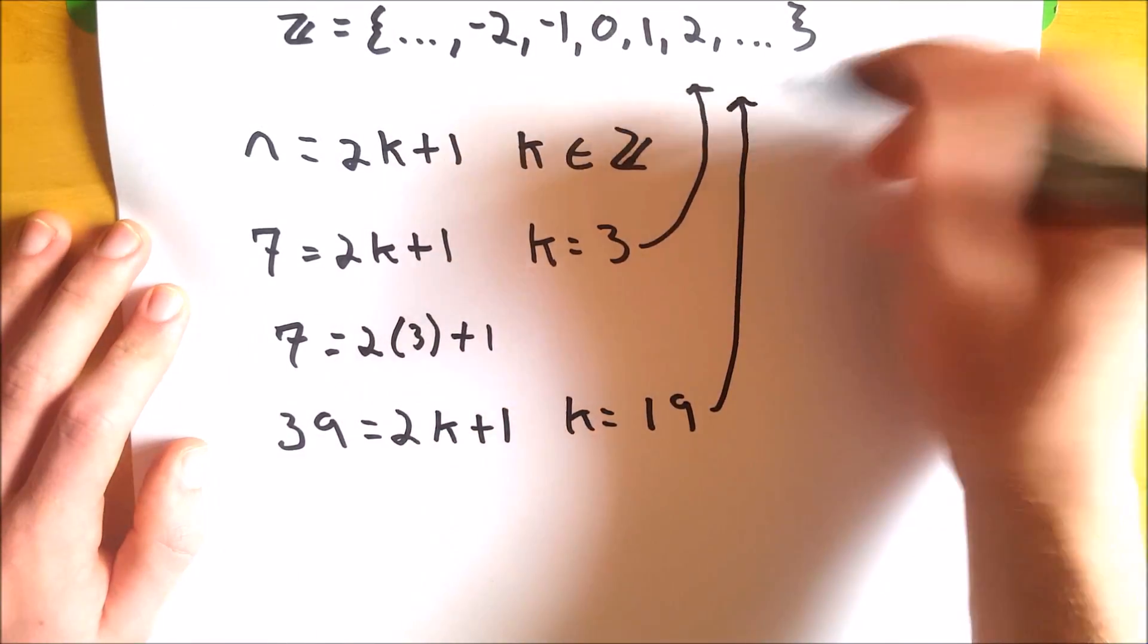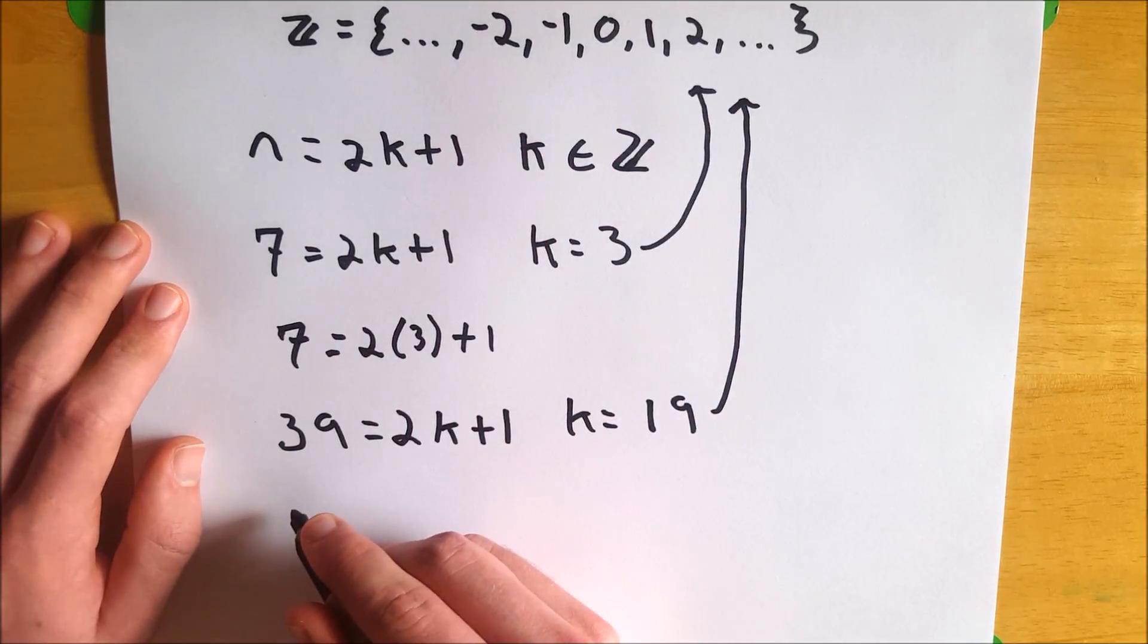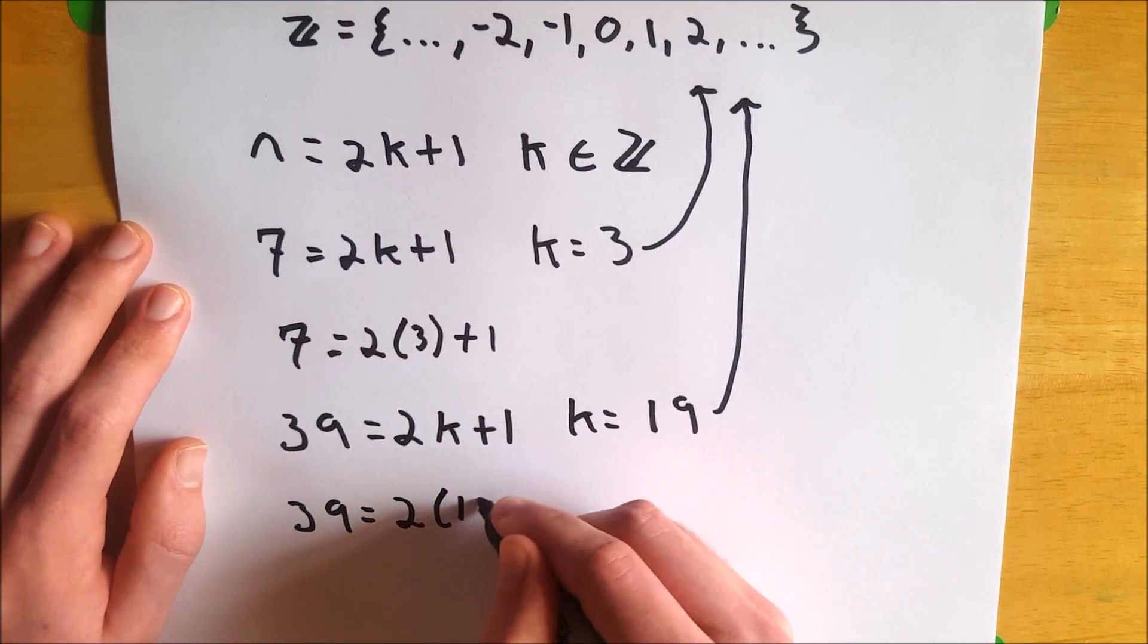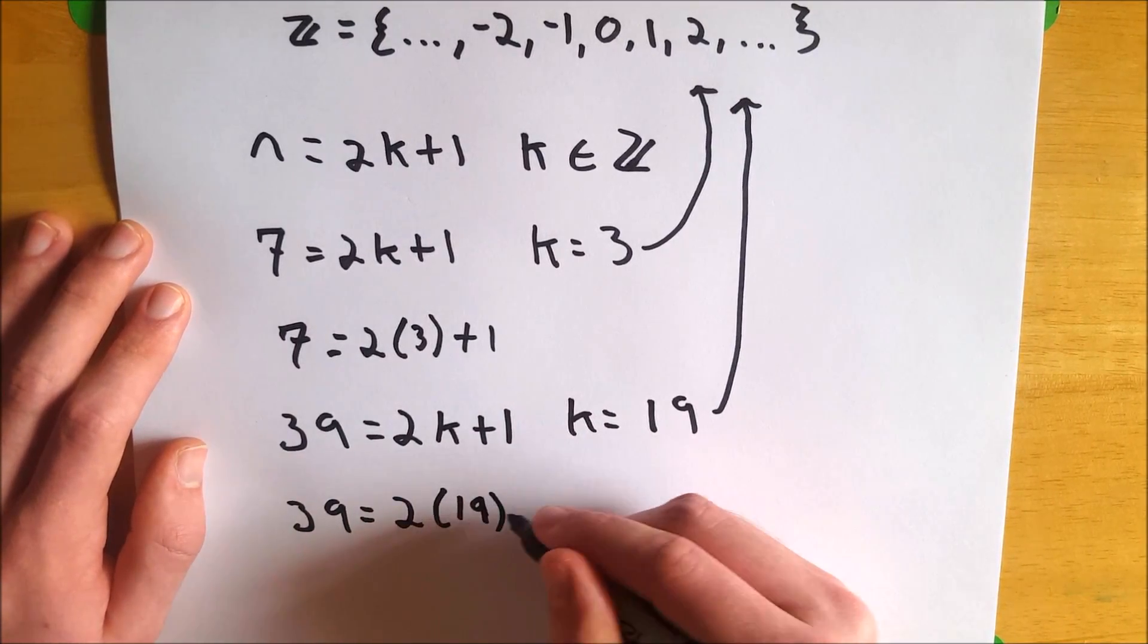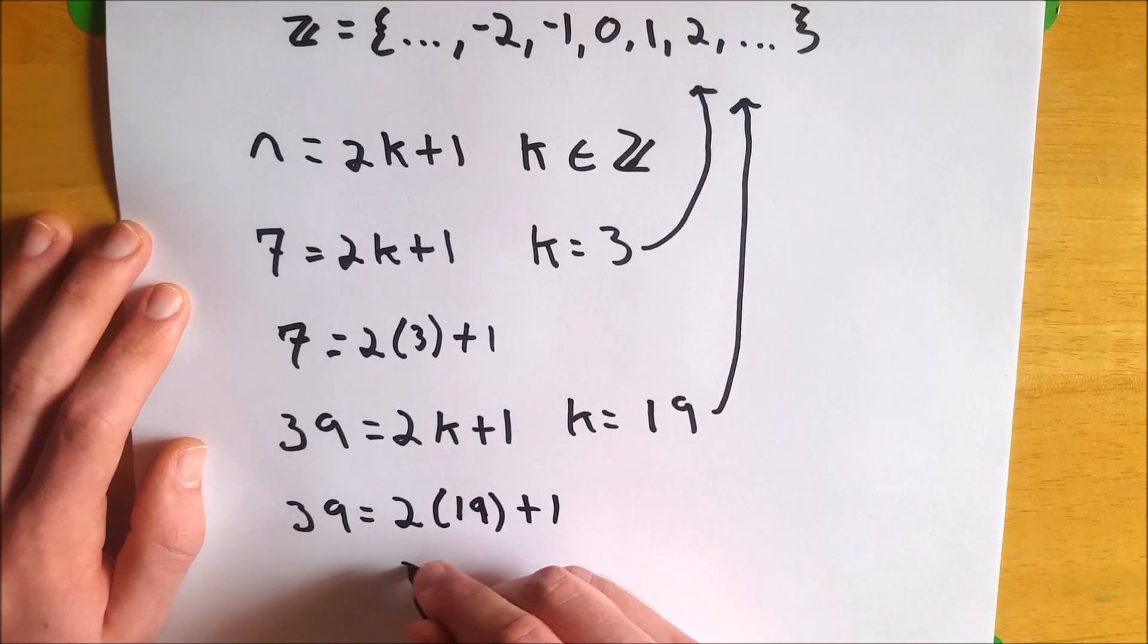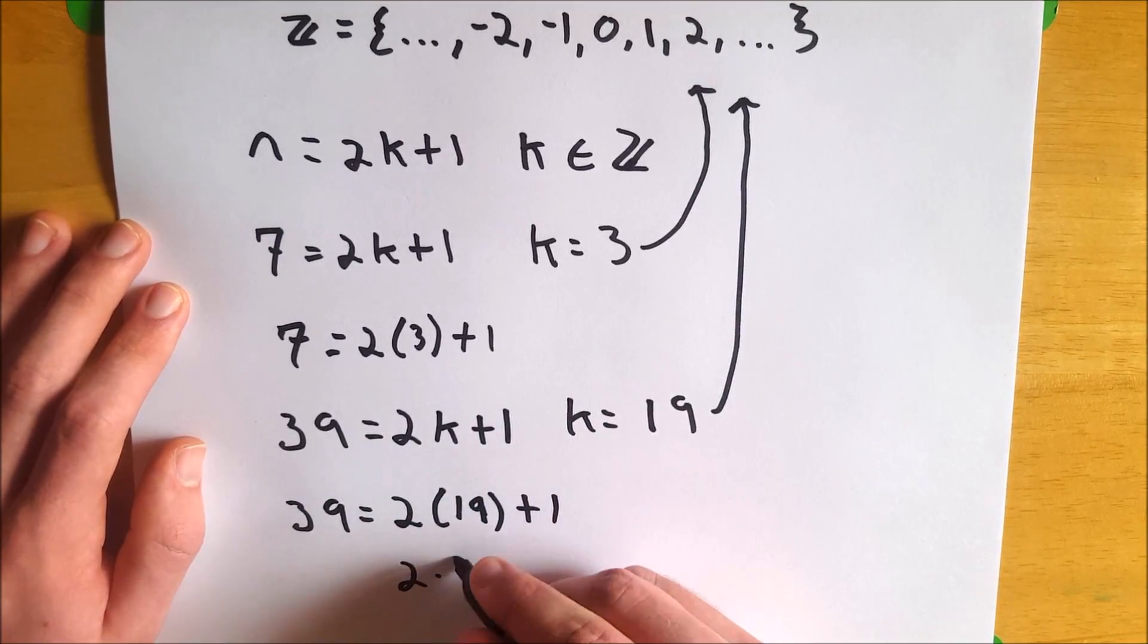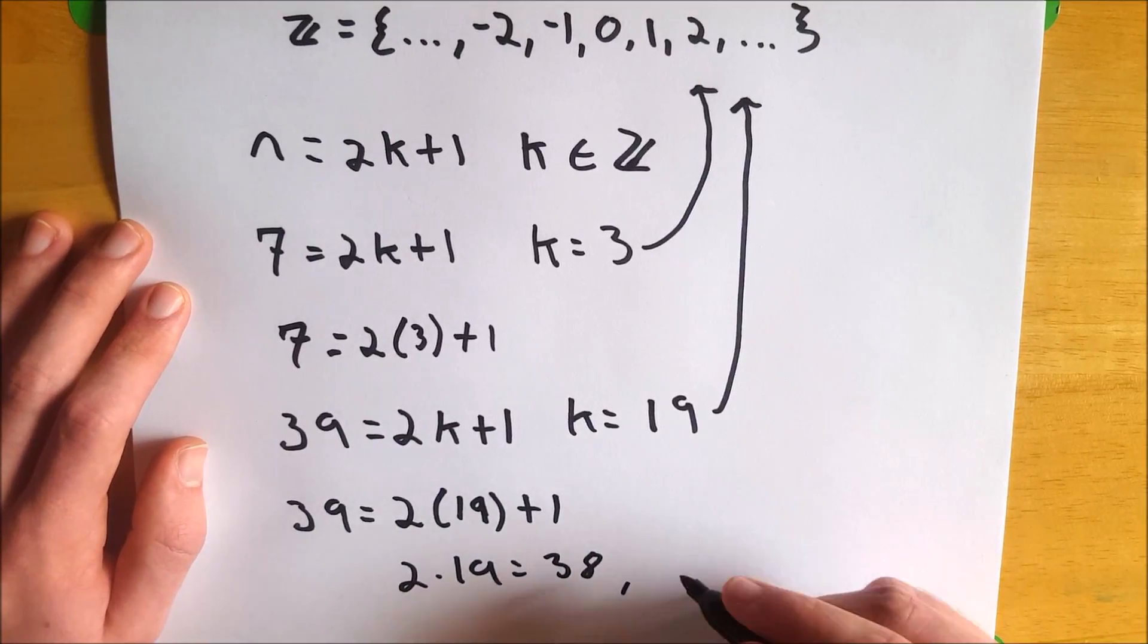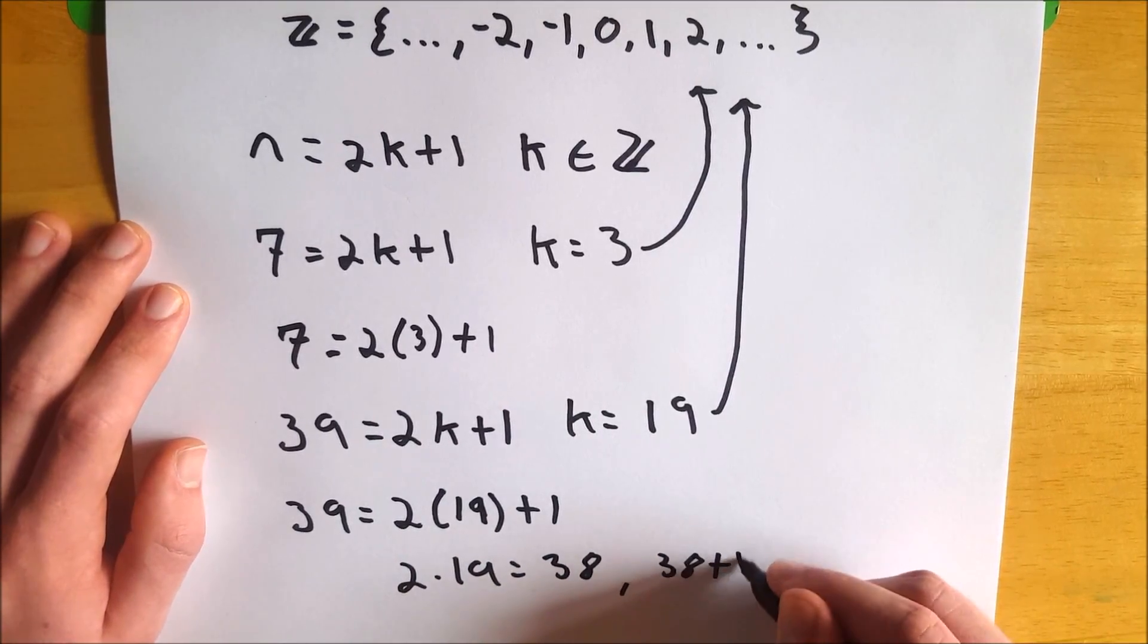19 element of the integers. So write that out again. 39 equals 2 times 19 plus 1 because 2 times 19 equals 38 and then 38 plus 1 equals 39.